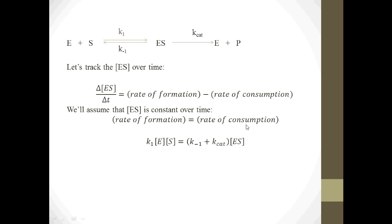Now let's incorporate the symbols. Looking at the rate of formation of ES: among the three reactions, only E plus S moving past K1 forms ES. The kinetics equation for that is K1 times E times S. For the rate of consumption of ES, the remaining two reactions consume it: ES moving past K-1 to form E plus S, and ES moving past Kcat to form E plus P. The kinetics equation for consumption is ES times the sum K-1 plus Kcat.